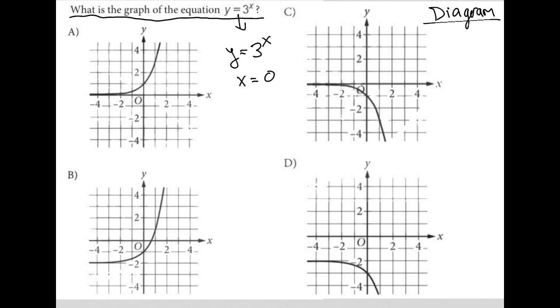In graph A, when x is zero, we have a point here at one on the y-axis. But for choice B, when x is zero, the graph is at negative one. For choice C, when x is zero, the graph is at negative one. And for choice D, when x is zero, the y value is at negative three.